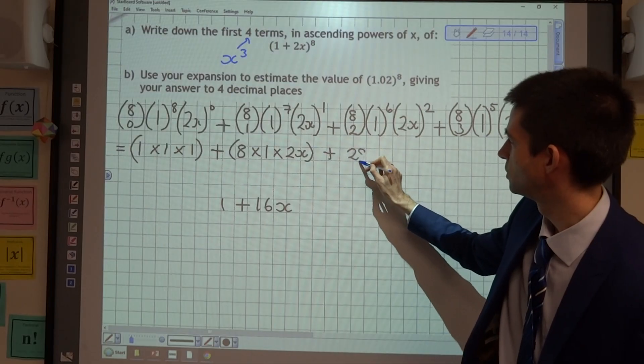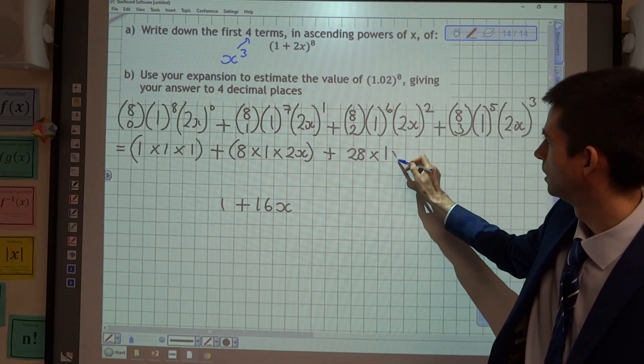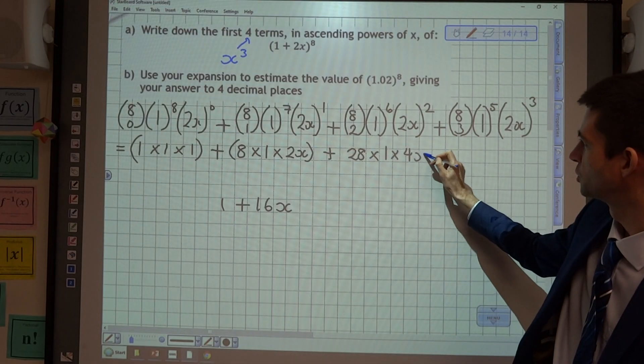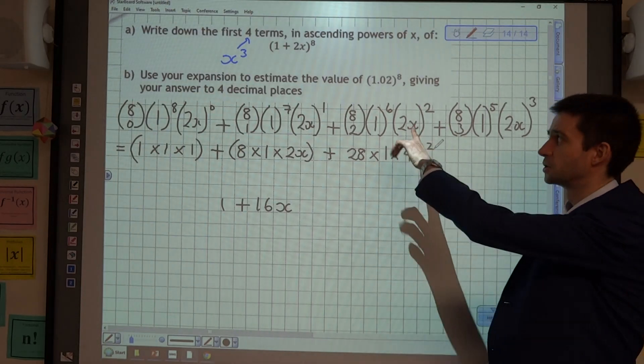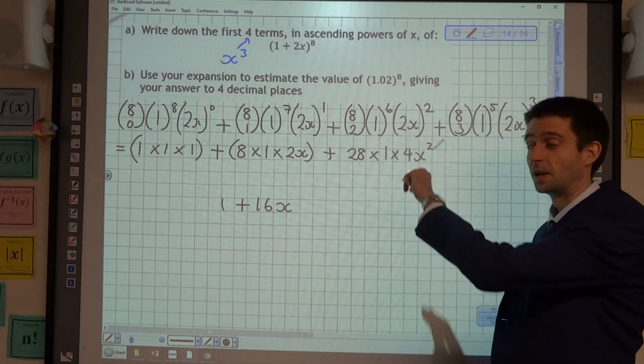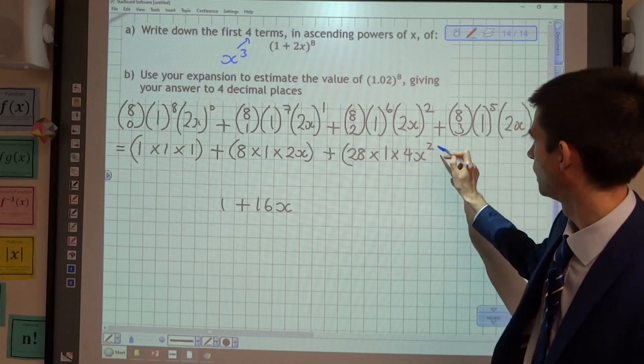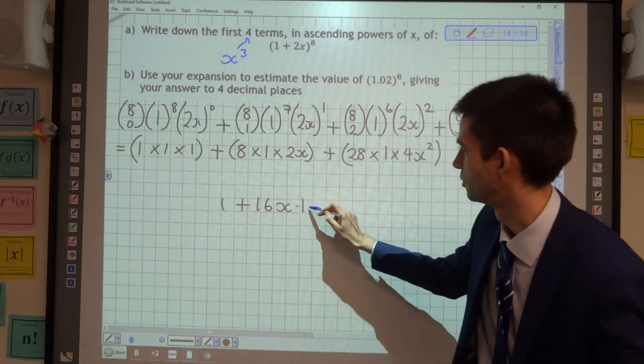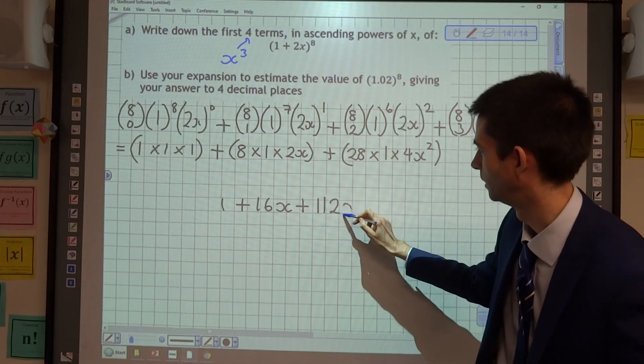8 choose 2 is 28 times 1, multiplied by 4x squared, because we are squaring the 2 as well as the x. And 28 times 4 is 112, so we have 112x squared.